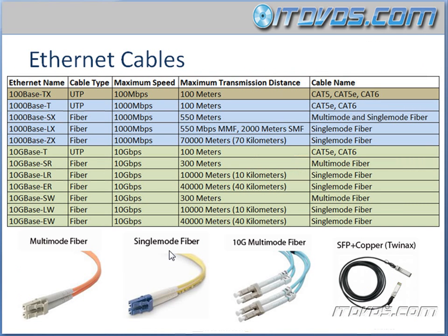Now let's talk about the different types of Ethernet cables and what type of speed and distance we get out of those cables. Here we have an Ethernet name, the cable type, the maximum speed, the maximum transmission distance, and also a cable name that we might commonly use. We do need to memorize these Ethernet names and know their speeds and their transmission distance.